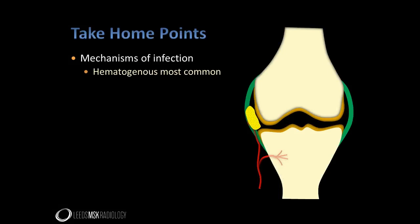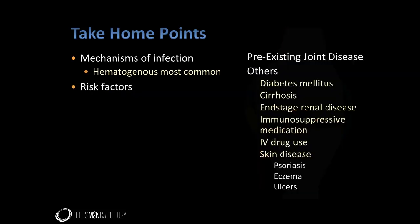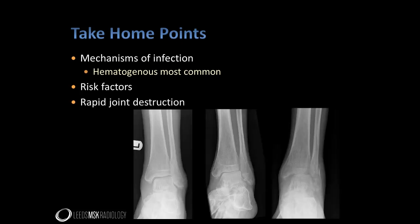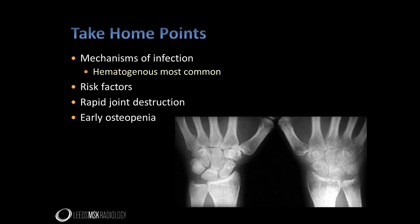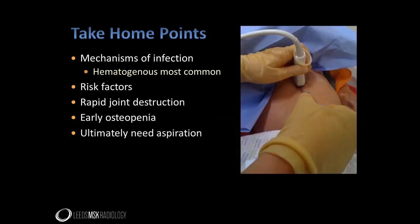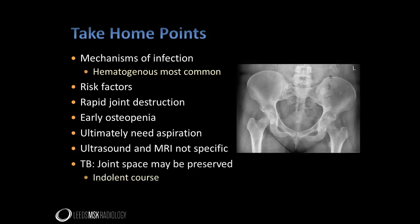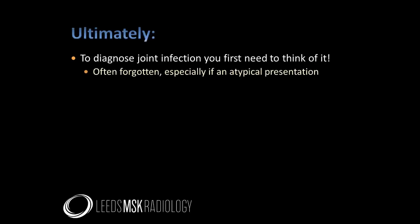So that concludes my presentation. I hope you are now familiar with the means by which joints become infected. Remember that pre-existing joint disease and a variety of other conditions predispose to septic arthritis. We discussed the radiographic appearances of joint sepsis including the rapid joint destruction that can occur with pyogenic infection and the early osteopenia typically seen around infected joints. Infected joints will usually end up requiring aspiration. While MRI and ultrasound are very sensitive to joint effusions and other changes in septic arthritis, they are non-specific. Also remember how TB arthritis runs a much more indolent course with relative preservation of joint space. My ultimate take-home point is that to diagnose joint, bursal or tenosynovial infection, you must first think of it — the possible diagnosis often gets forgotten, especially if the presentation is atypical. Thank you very much for watching.